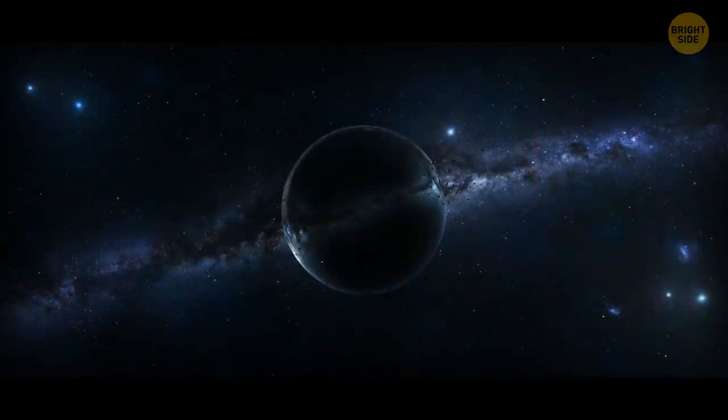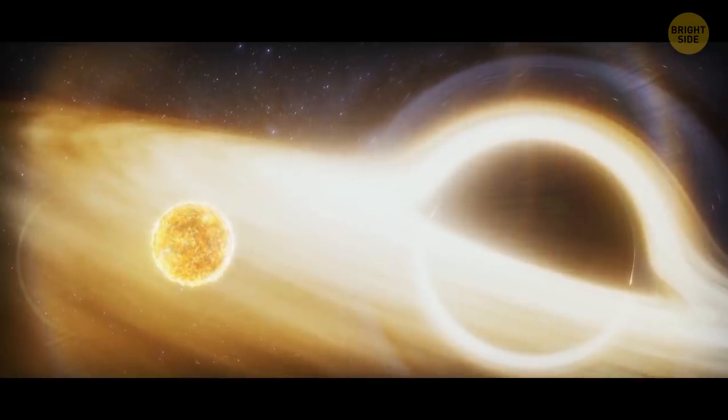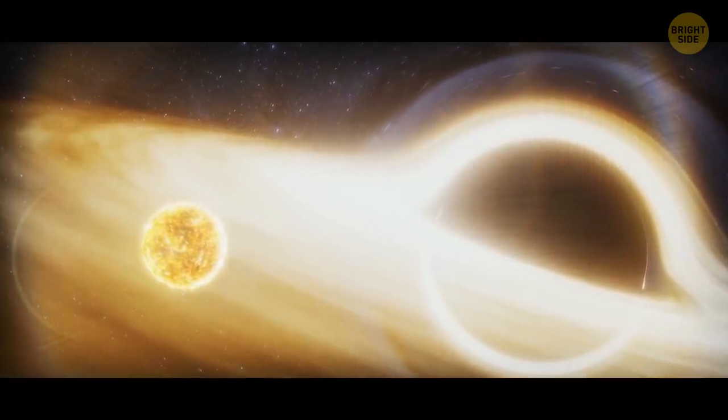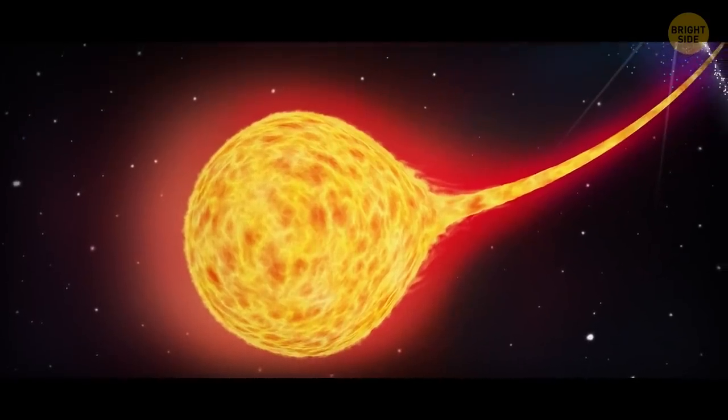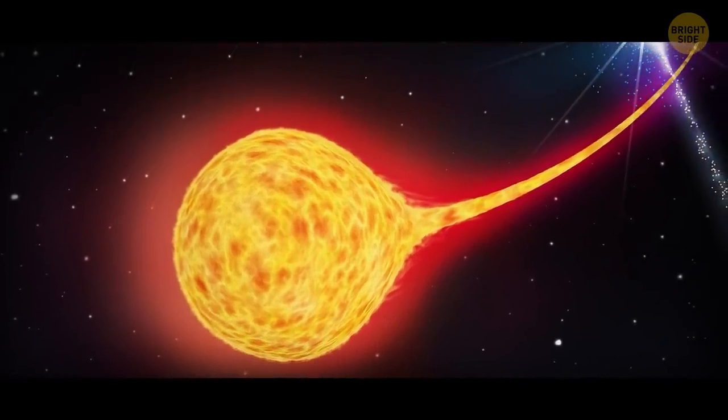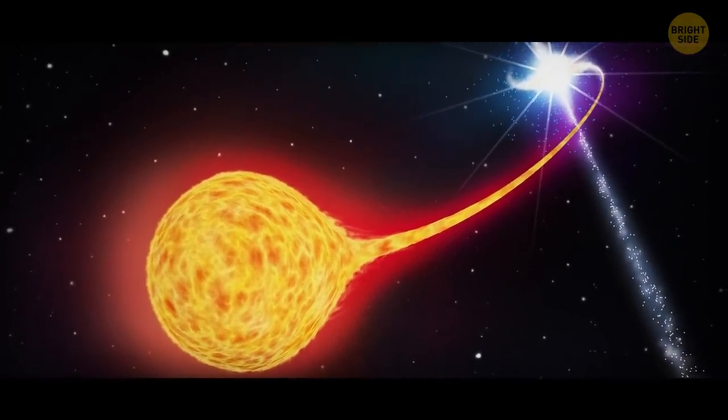This black disk is so heavy that it has incredibly strong gravity. Nothing can leave its gravitational field. And now, we see a star slowly approaching it. First, the glowing light layers of the star begin to stretch towards the black hole. It looks as if the star is simply unrolling like a ball of thread.